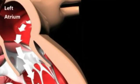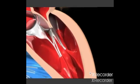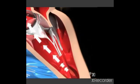The blood flows from the left atrium to the left ventricle through the opening of the mitral valve. When the left ventricle gets full of blood, the mitral valve shuts.